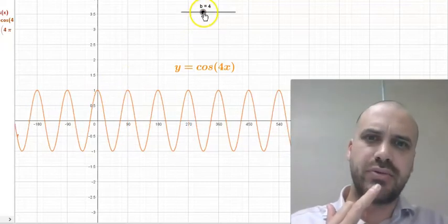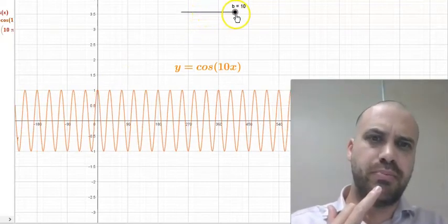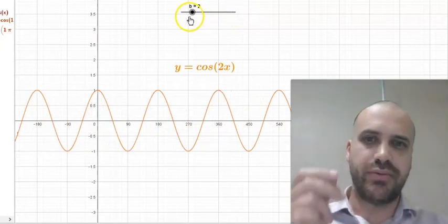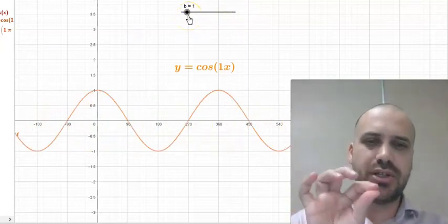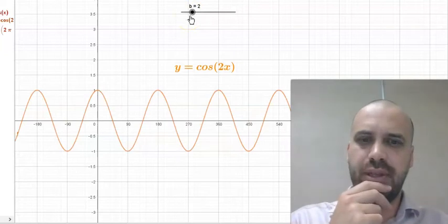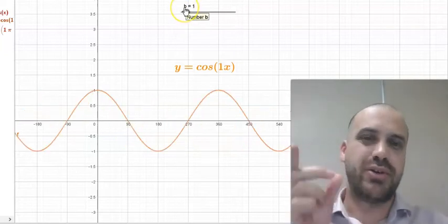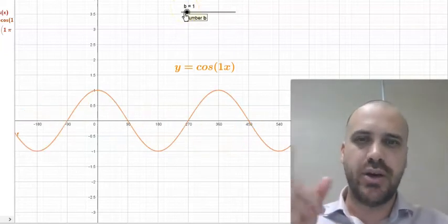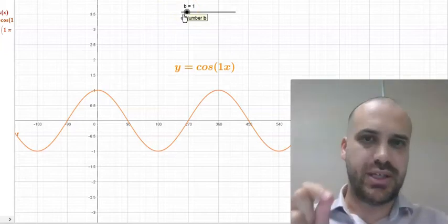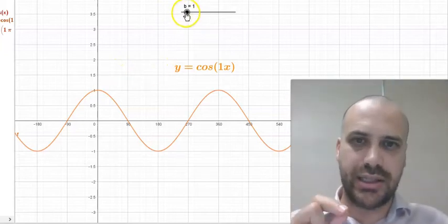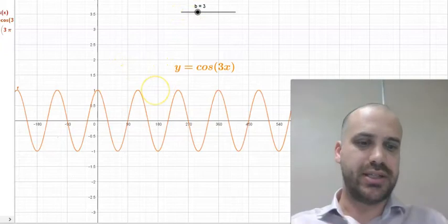We can see that there's a relationship between B and the period of this periodic function, but it's not a direct relationship where the period is 1 and B is 1. We actually need to do a little bit of heavy lifting here. Just a little bit.